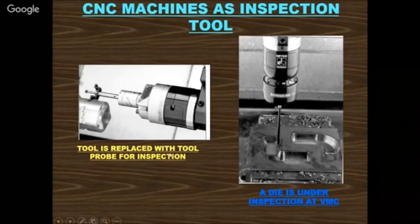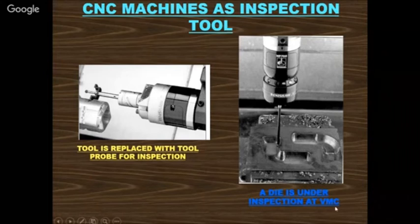In CNC machine inspection, the tool is replaced with a probe for inspection. Through the probes, we can check the particular component geometry. A die is shown under inspection at VMC (Vertical Machining Center) — through this probe you can check dimensions like length, radius, and depth. All the design dimensions can be verified.